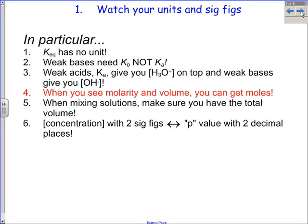Remember, there's a relationship between Ka and Kb and H+ and OH-, but be very aware of exactly what you're going to have and what they're asking for in a problem. With weak acids, you're getting H3O+, and with weak bases, you're solving for OH-. When you see a molarity and a volume, you're going to get a number of moles. With titrations and precipitation problems, you've got to find moles and then divide by the total volume to get concentration. Make sure you've got the total volume when mixing solutions. For sig figs, when you have a concentration with two sig figs, you go to a p-value with two decimal places.